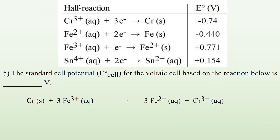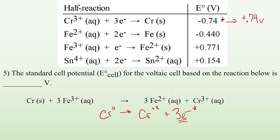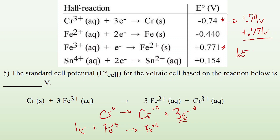Number 5: the standard cell potential for the voltaic cell. I've got CR solid — so it's zero — becoming CR³⁺. It must have lost three electrons. Since this is oxidation, I look for the opposite reaction and find it. Since it's the opposite reaction, I change the sign from negative to positive: positive 0.74 volts. Now for iron — Fe³⁺ arrow becomes Fe²⁺. It must have gained one electron, so since this is reduction, I look for the exact same thing on the chart. I find it, and since it's the same process, I don't change the value. Adding these together, I end up with 1.511 volts.